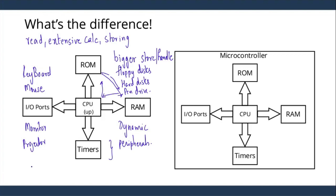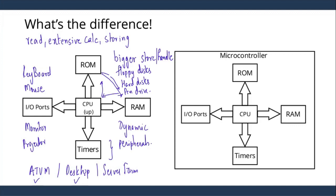CPUs are used in standalone or small systems like ATVM machines — automatic ticket vending machines — all the way to desktops and big server farms. Server farms are like Google or Gmail, where your data is stored on the cloud. An ATVM is a very small application; a desktop is comparatively complex; and server farms are very, very complex applications. CPUs are very flexible and can be used from an ATVM machine to a server farm.